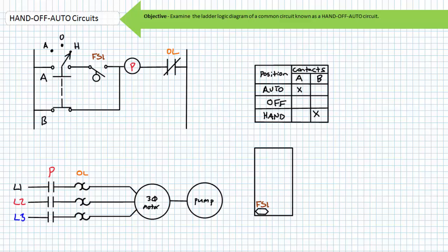Similarly, the hand setting overrides the automatic nature of the system. In hand mode, the selector switch provides an alternate path that directly energizes the P contactor coil, circumventing the automatic logic.